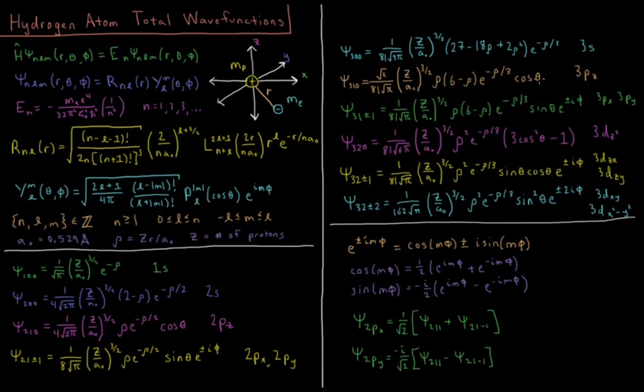3pz gives us a cos θ in there and a quadratic polynomial again. 3, 1, ±1 are 3px and 3py. We would pull the same trick there in order to get those into px and py from their standard e^(±iφ) there.